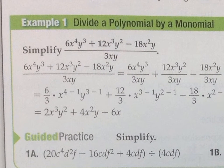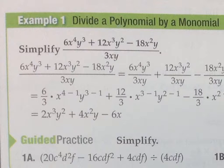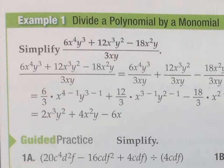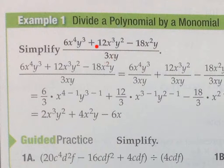The concept is: if you have a crazy-looking polynomial divided by a monomial, it's really easy. You just take that denominator and split it to each one of them. So the 3xy is going to go under the first term, the 3xy under the second, and the 3xy under the third.